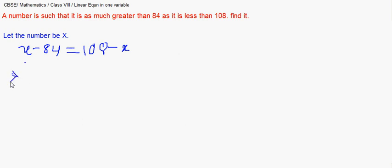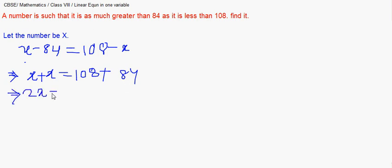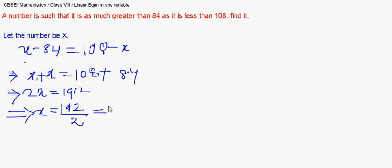Getting this equation correct for all word problems is an important step. We carry x to the left and 84 to the right. So 108 plus 84 is 192, giving us 2x equals 192, therefore x equals 192 divided by 2, which is 96. That means x is 96 — this number is as much smaller than 108 as it is greater than 84.